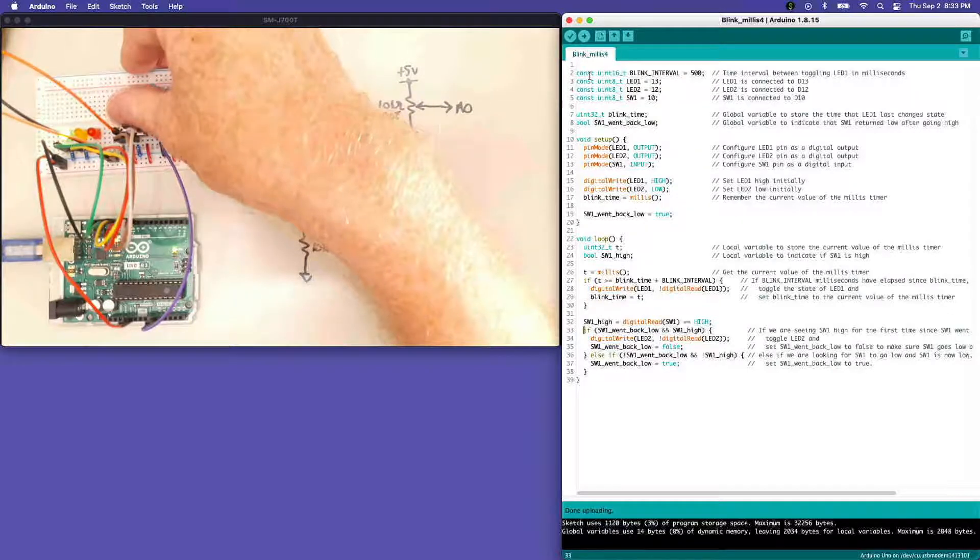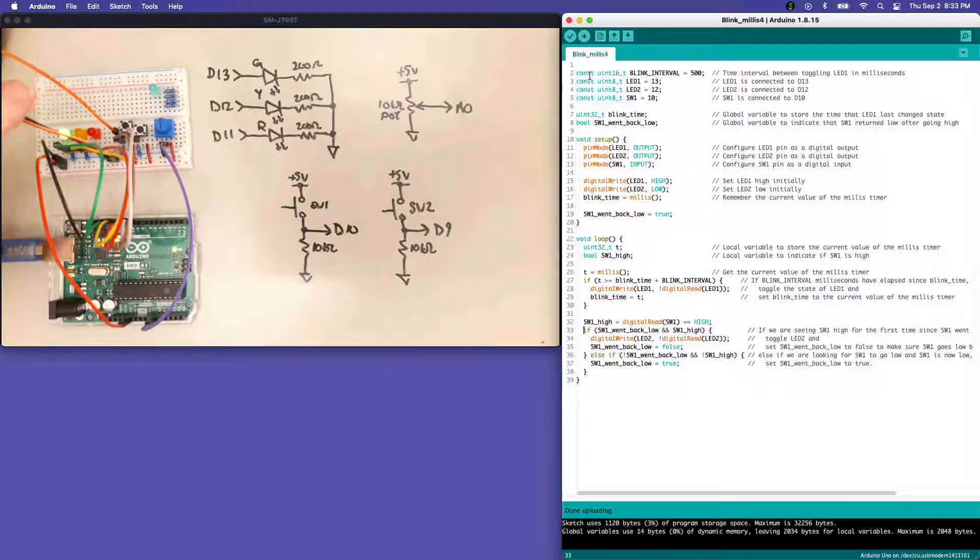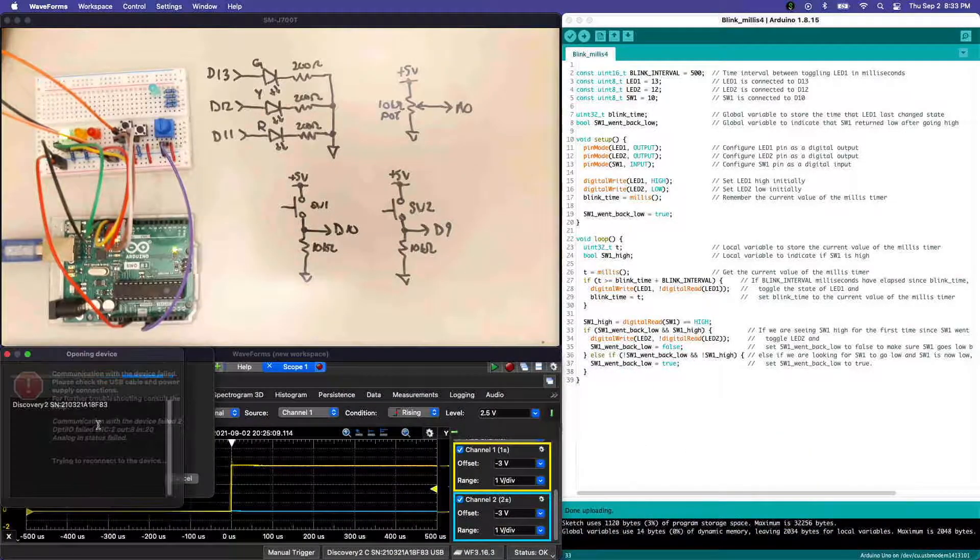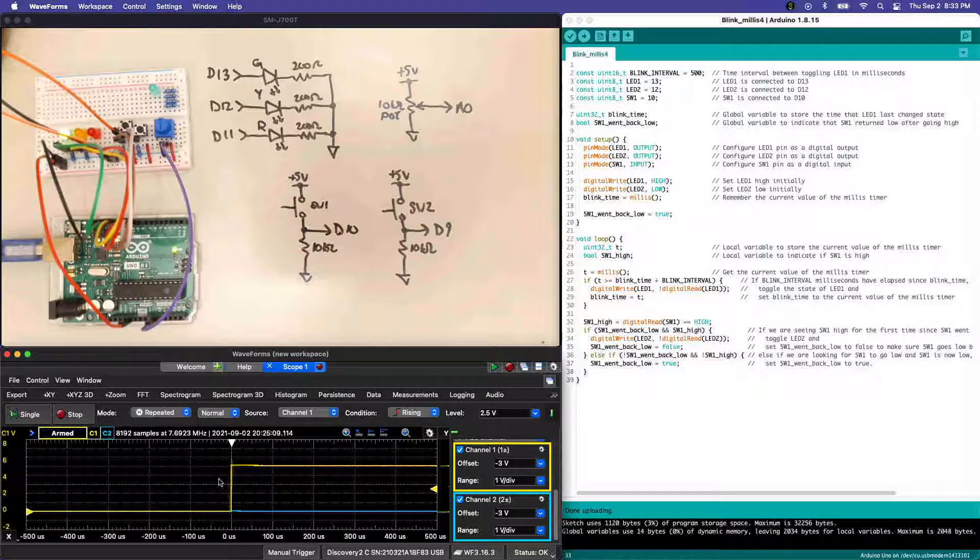This is a phenomenon called bounce. To show you what's going on, I've got the tactile switch one here and I'm looking at it with an analog discovery. Every once in a while there's this communication with my analog discovery which is not so good. I've got it set to trigger on channel one, which is the one I'm using to look at the tactile switch.